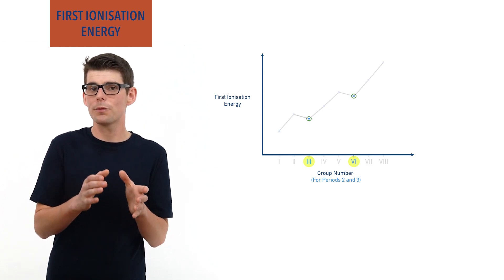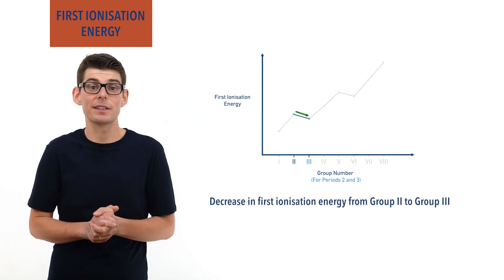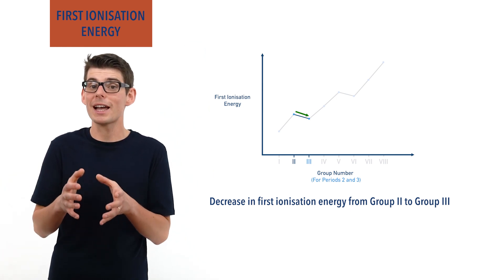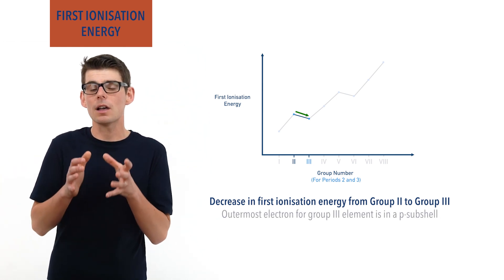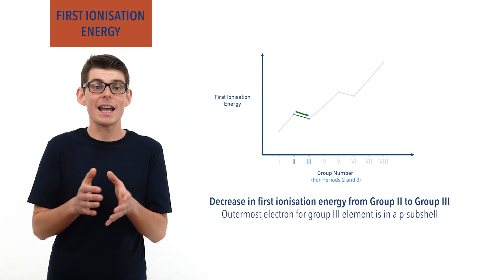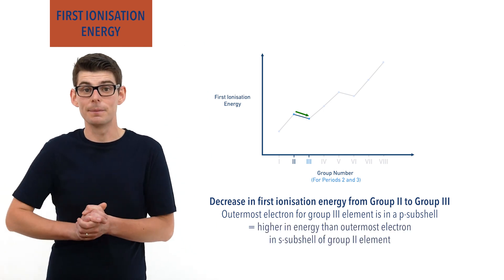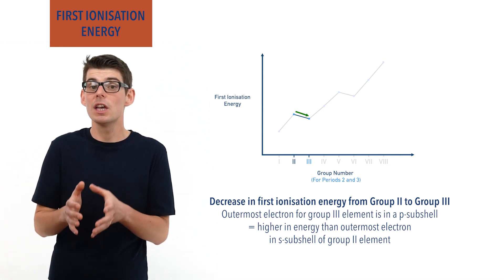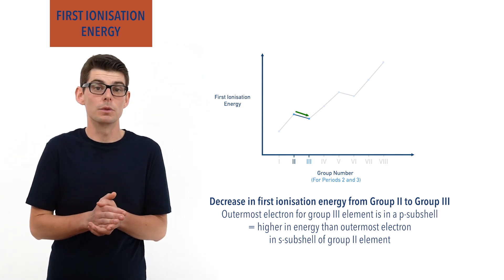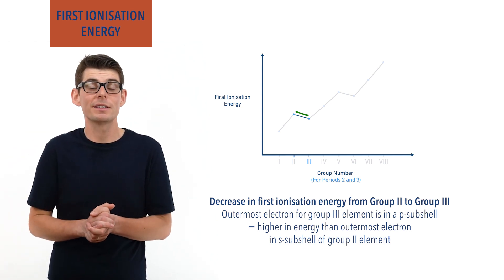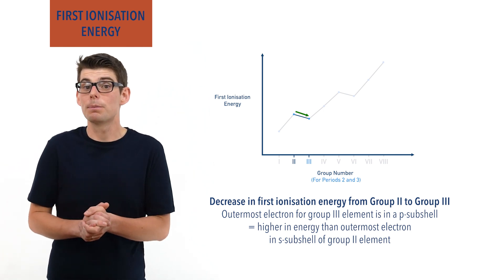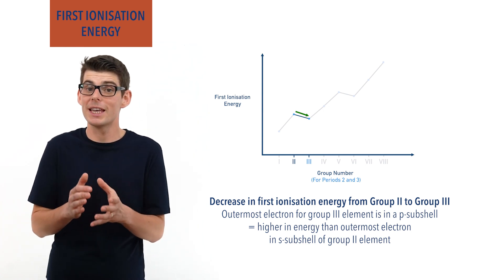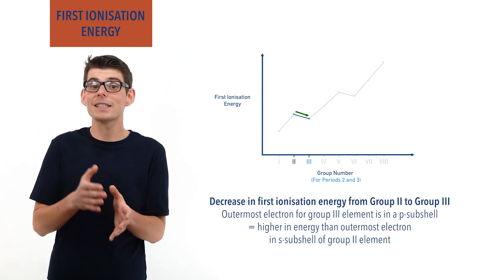Moving from group 2 to group 3 leads to a decrease in first ionization energy. This is because for group 3 elements, the extra added electron has to go into a new p subshell that is higher in energy than the s subshell the outer electron in the group 2 element is in. This means the outermost electron for the group 3 element is at a higher energy and is easier to remove, giving a lower first ionization energy. The added proton and positive charge in the nucleus doesn't quite give enough extra attraction to override the increased distance and energy gap between the s and p subshells.